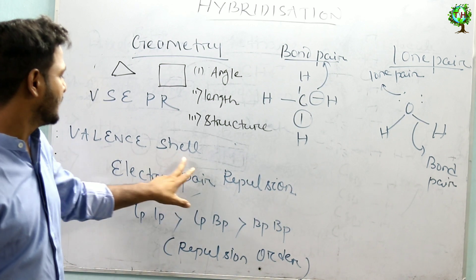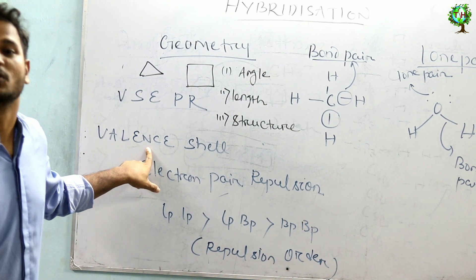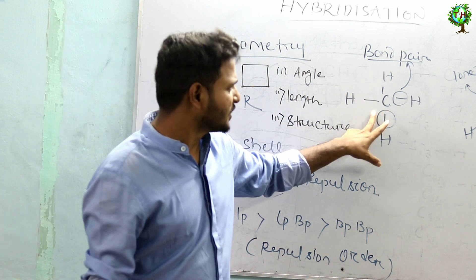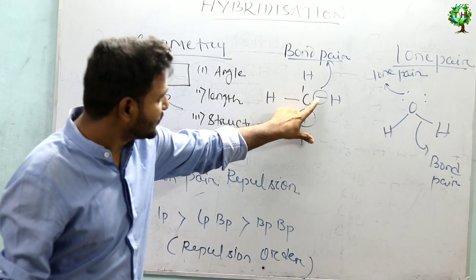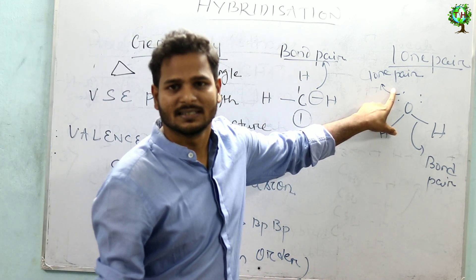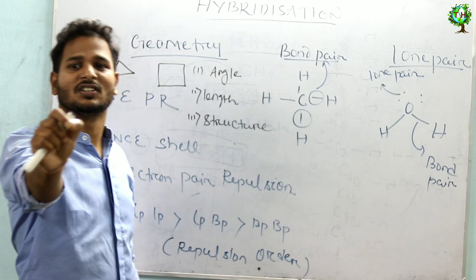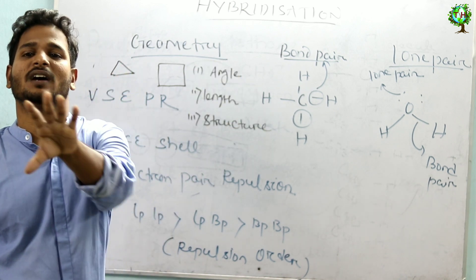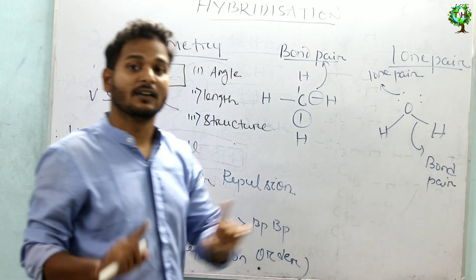There is a theory called VSEPR theory — that is Valence Shell Electron Pair Repulsion theory. Valence shell means outermost electrons; they are participating in chemical bonding. Focus on that molecule CH4: there are four bonds. Bond means electrons. There is a repulsion between these two bonds. The molecules have bond pairs and also lone pairs, and there is also repulsion between them. So any molecule may have a structure, and that structure depends upon the bond pairs and lone pairs. Those bond pairs and lone pairs belong to hybrid orbitals — the hybrid orbitals contain either sigma bonds or lone pairs.